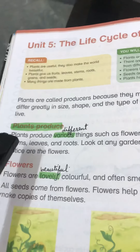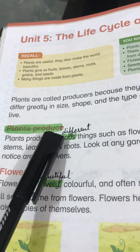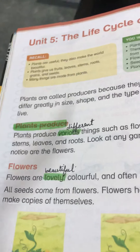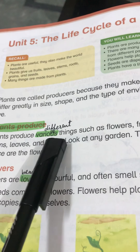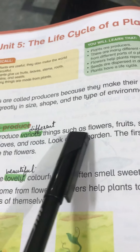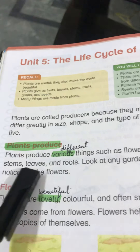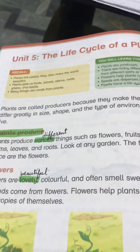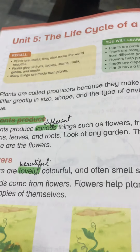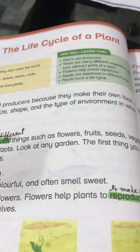Let's start the first topic: Plants Produce. Plants produce various things such as flowers, fruits, seeds, vegetables, stems, leaves, and roots. Plants بہت سی different چیزیں produce کرتے ہیں جیسے پھول، پھل، بیج، سبزیاں، stems، پتے اور جڑیں۔